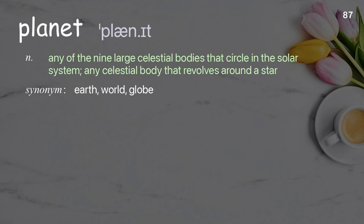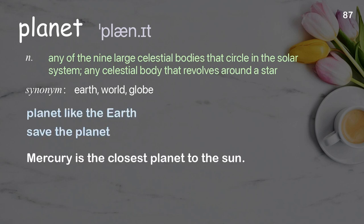Planet. Any of the nine large celestial bodies that circle in the solar system; any celestial body that revolves around a star. Examples: planet like the Earth; save the planet. Mercury is the closest planet to the sun.